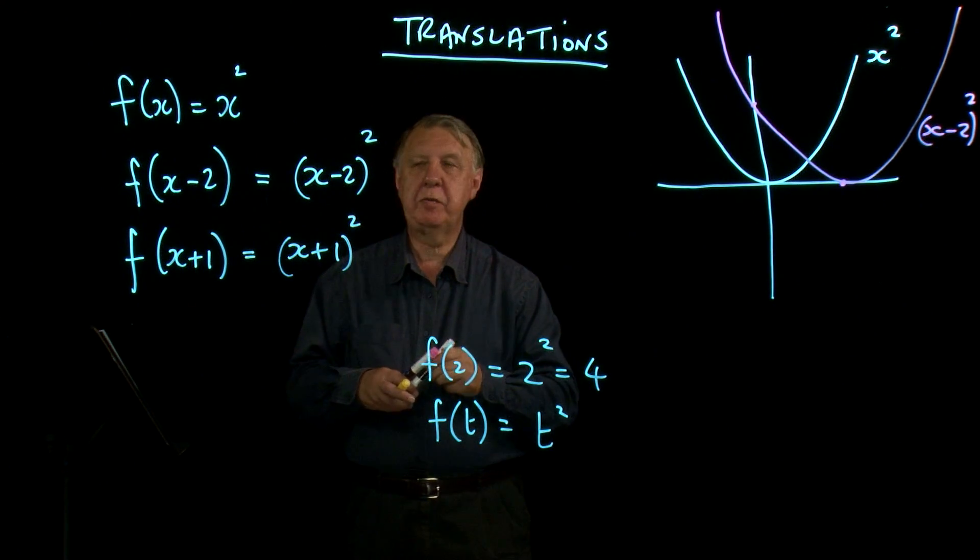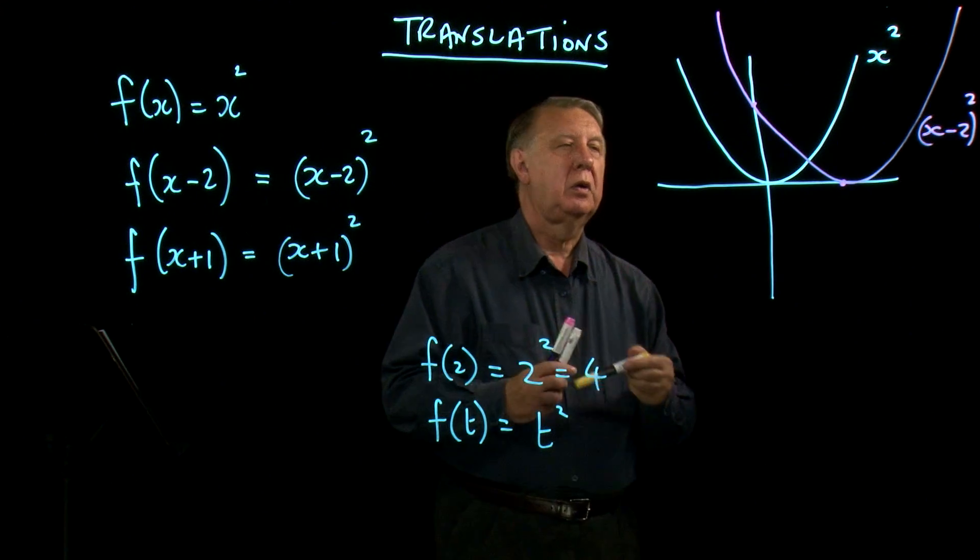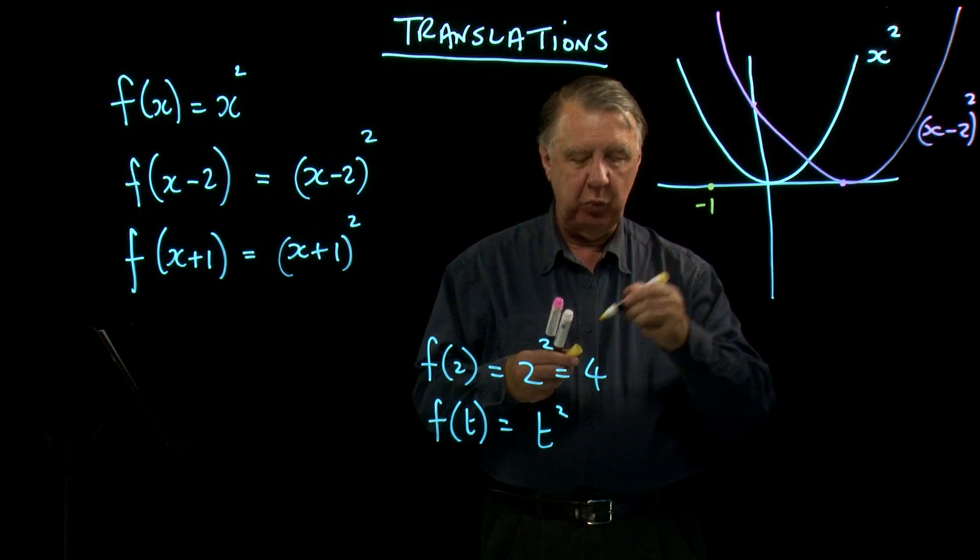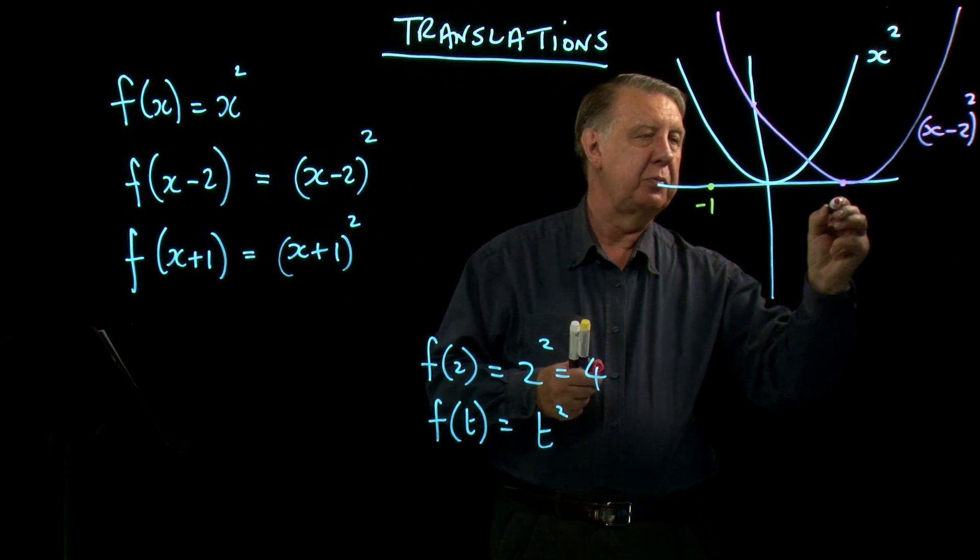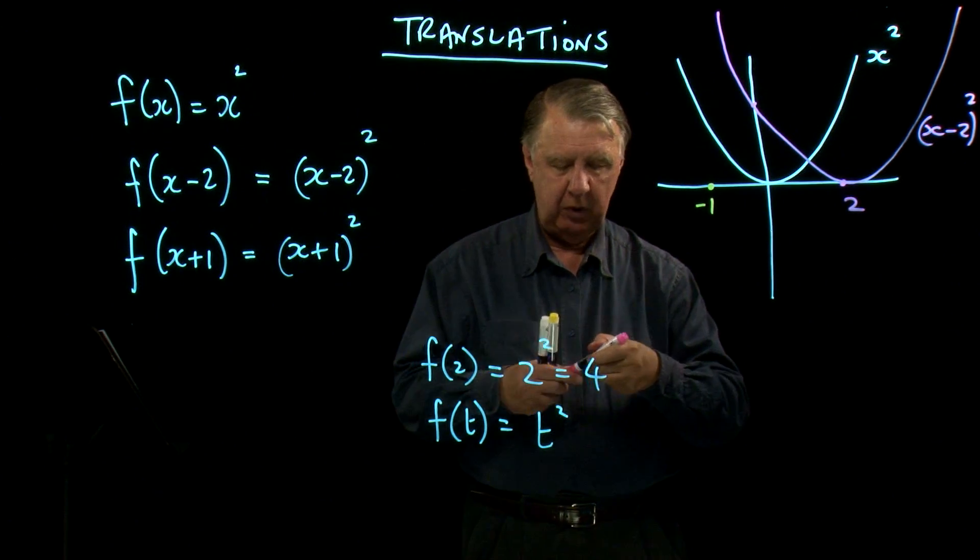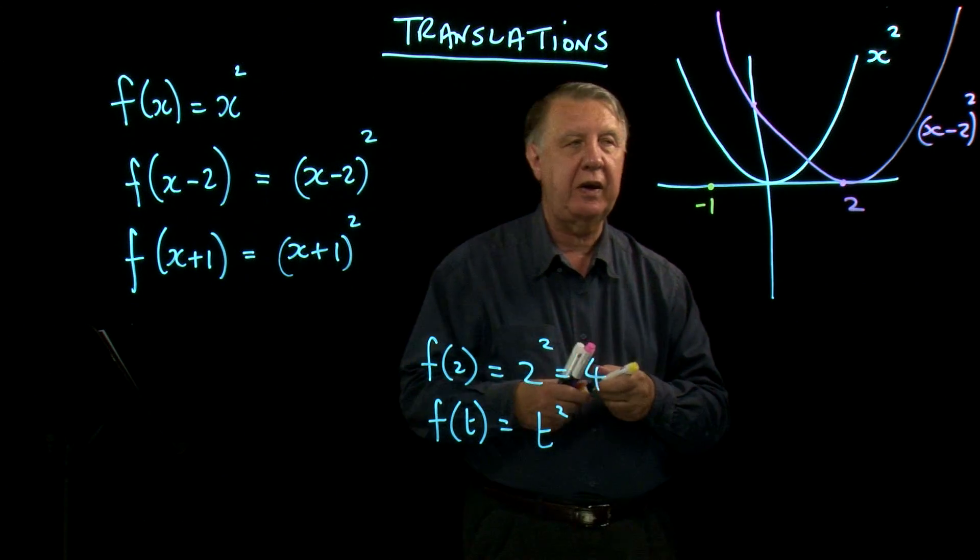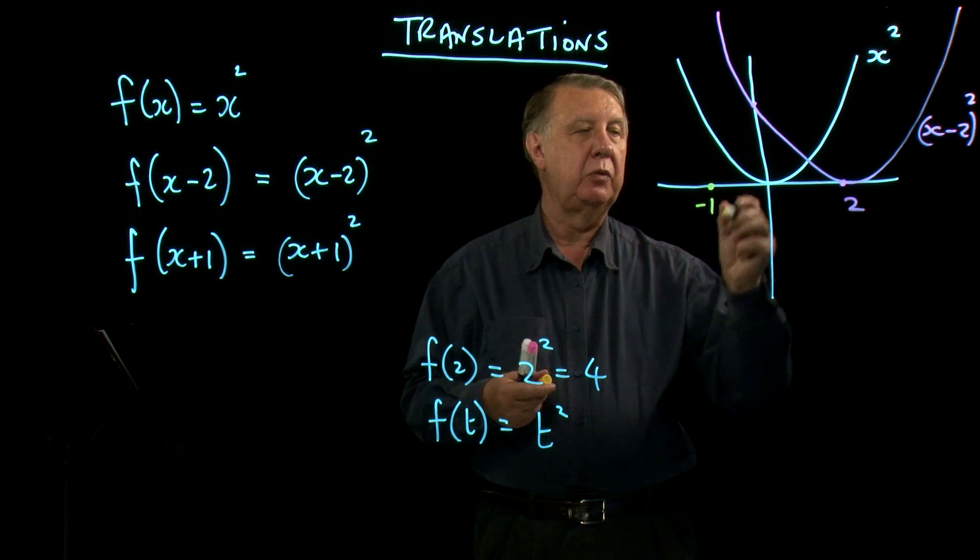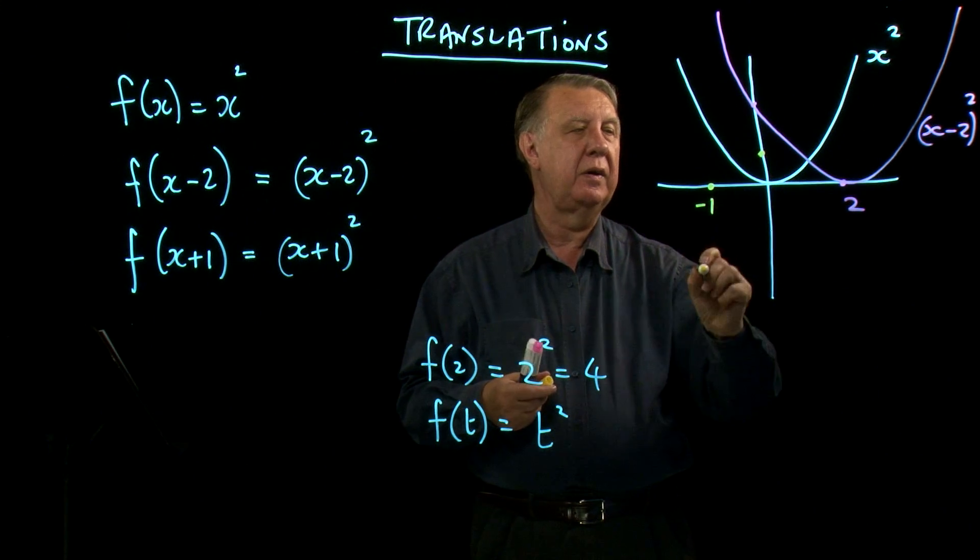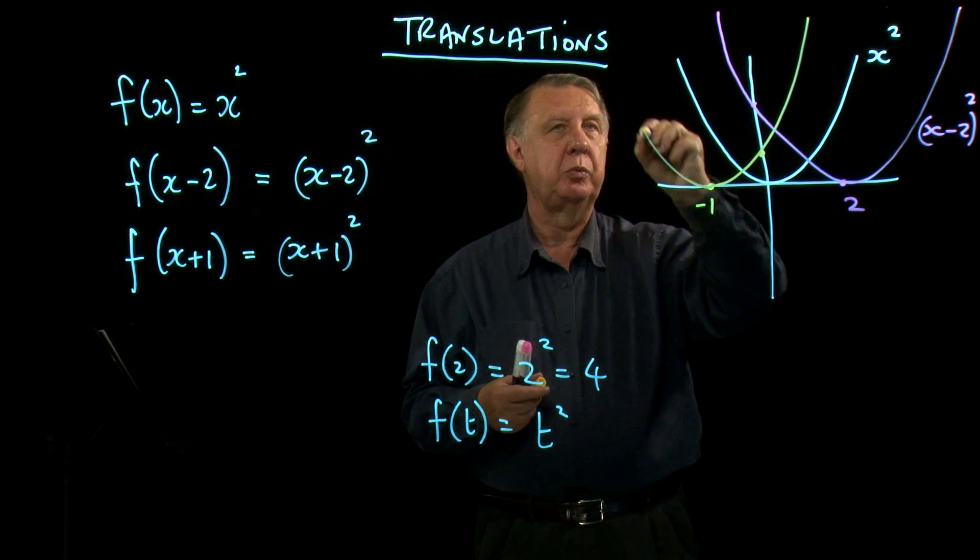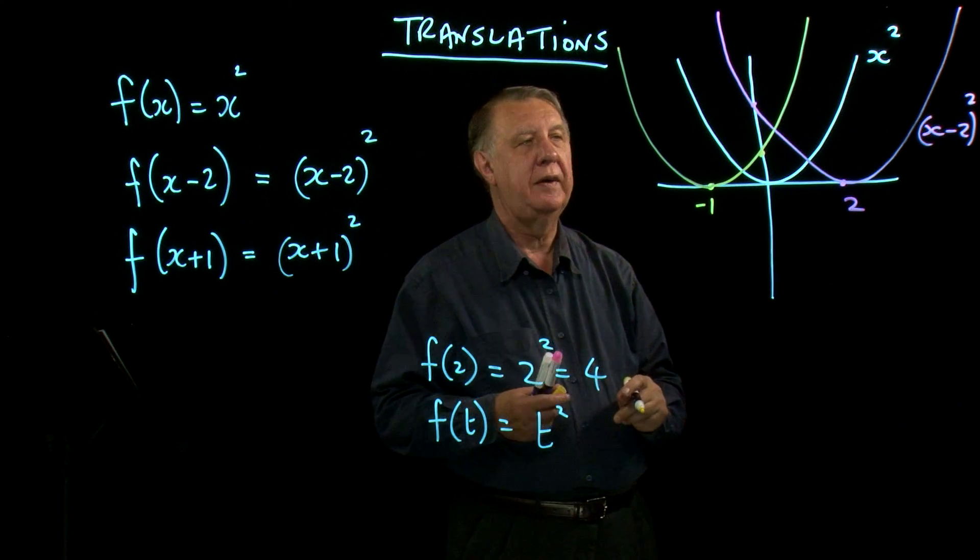And by a similar argument, we'd go back to negative 1. We ought to mark the 2 there. So negative 1 would be where it hit the x-axis. It would also go through 1 there. And this time, the graph would be like that.